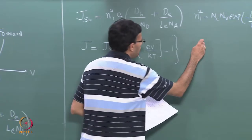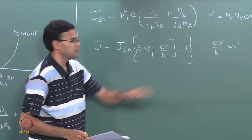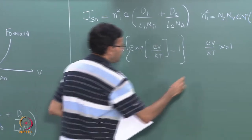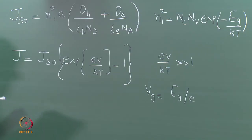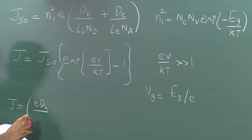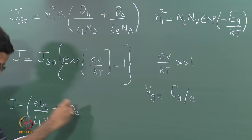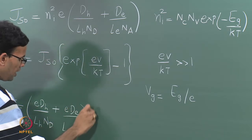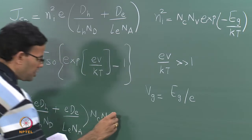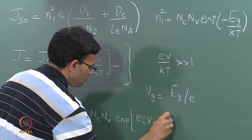For the sake of argument, eV/kT is usually much greater than 1, so we can ignore the minus 1 term. I am also going to introduce another term V_g, which is nothing but the band gap divided by e. Substituting, J becomes equal to e·D_h/(L_h·N_D) plus e·D_e/(L_e·N_A) times N_C·N_V·exp(e(V−V_g)/kT).